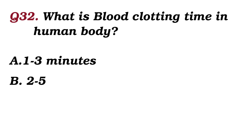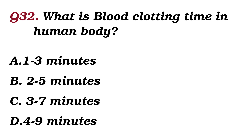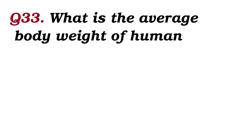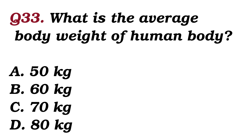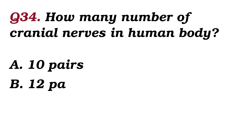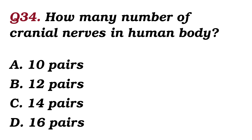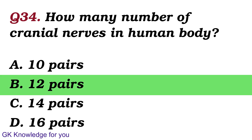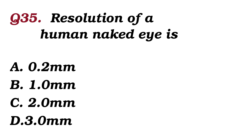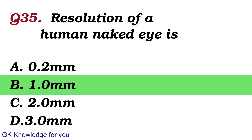What is the blood clotting time in the human body? The answer is 2 to 5 minutes. What is the average body weight of a human body? The answer is 70 kg. How many cranial nerves are in the human body? The answer is 12 pairs. What is the resolution of the human neck disc? The answer is 1.0 mm.